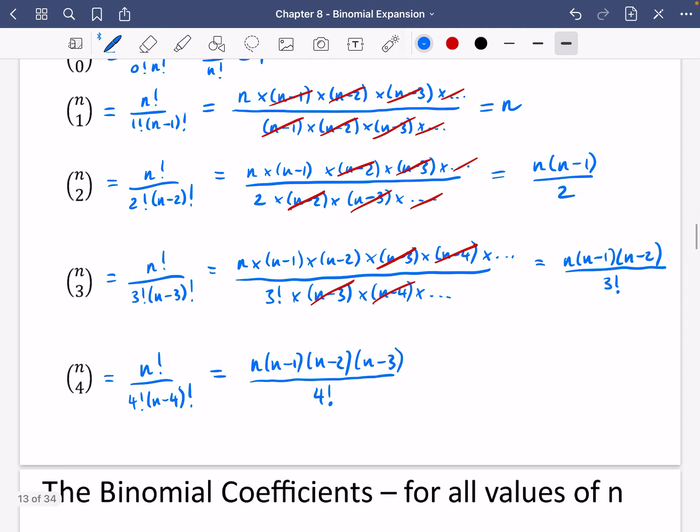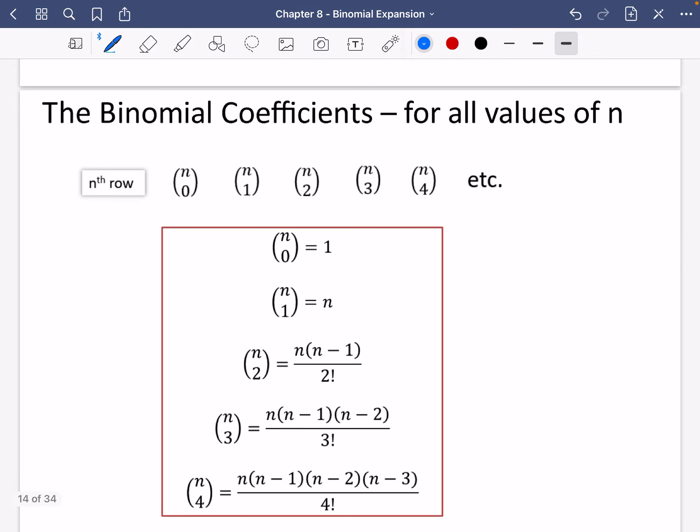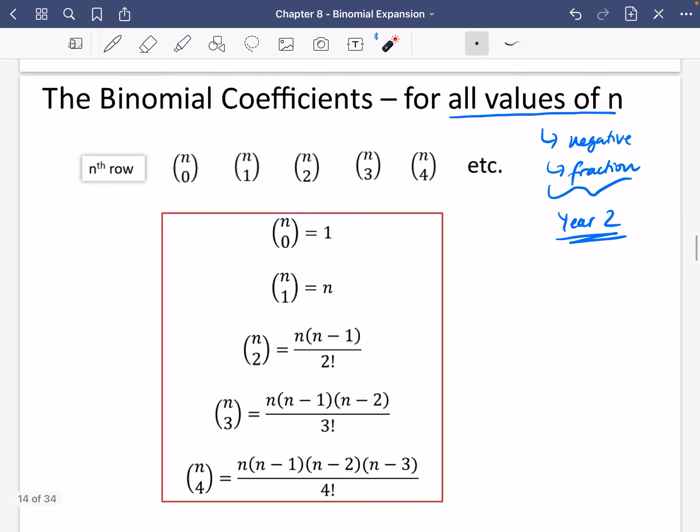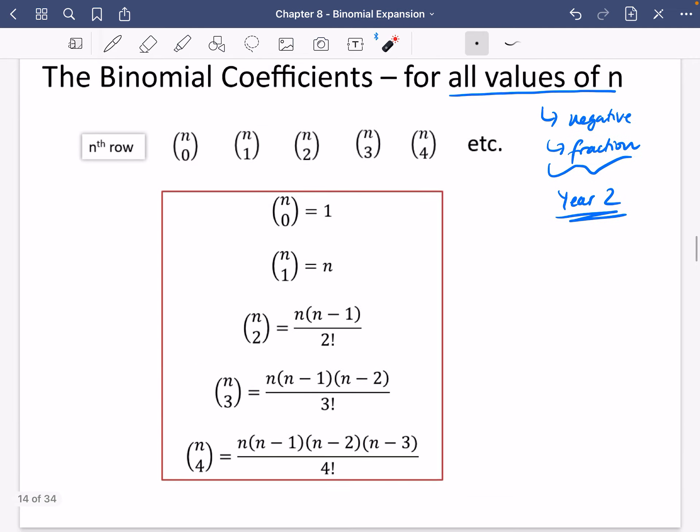So the reason I wanted to show you this is because these are the binomial coefficients that will work for all values of n. So it doesn't even have to be an integer. It could be a negative. It could be a fraction. But don't worry about these things too much, because these are both in year 2. But I wanted to introduce this to you now, so that you were completely aware of how this all worked. So we've got 1, n, n minus this one and all of these bits that we've got here. And you can use this if you don't want to use your calculator version as well. So I thought that was a useful little bit that's going to prepare you for year 2. But we're going to come back in a second and think about why these are all linked together.